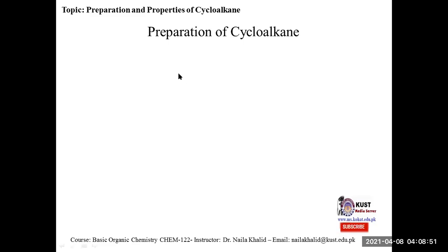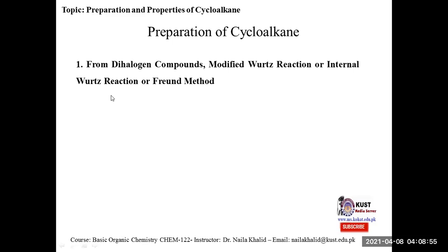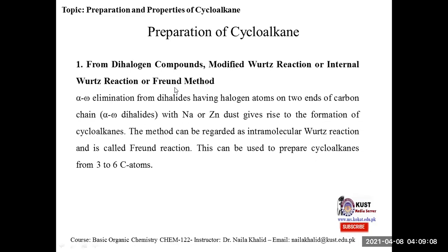The first method of cycloalkane preparation is from dihalogen compounds. This is also known as the modified Wurtz reaction or internal Wurtz reaction. It is also known as the Freund method. In this method, alpha-omega elimination of dihalides followed by cyclization is the basic strategy of this reaction.